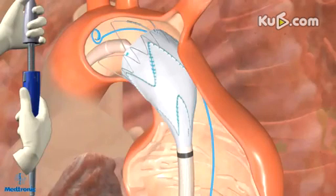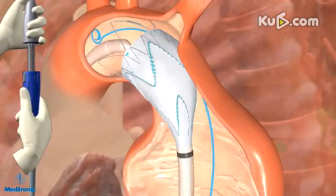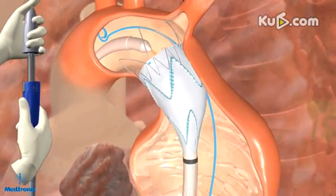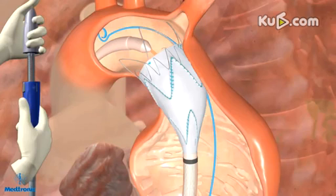If the stent graft was deployed higher than the targeted landing zone, the stent graft can be repositioned distally to its desired location by retracting it, as long as no more than two of the proximal springs have been deployed. To retract the partially deployed stent graft, gently pull down on the entire delivery system until the proximal markers indicating the top edge of the fabric are at the desired position. Do not advance the Talent Thoracic system with an exposed proximal spring, as it may lead to aortic perforation.